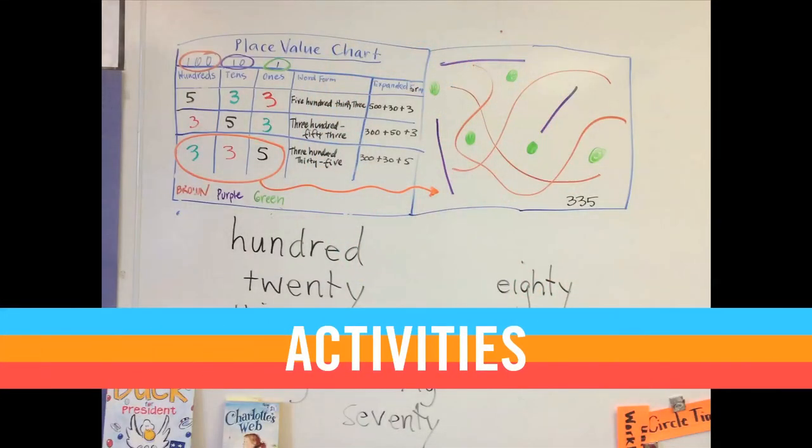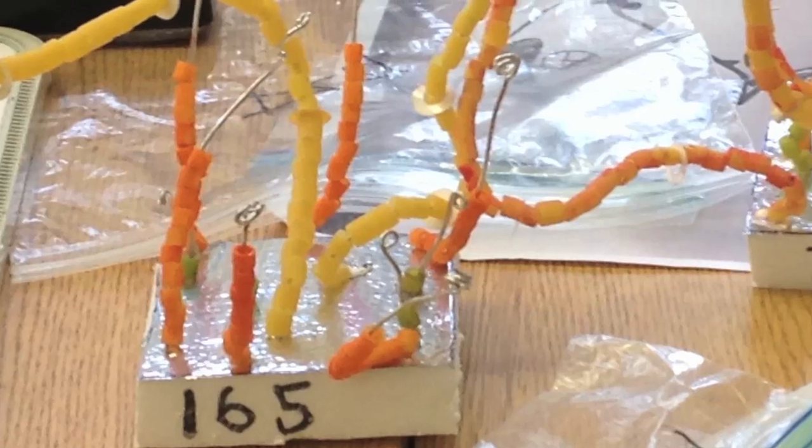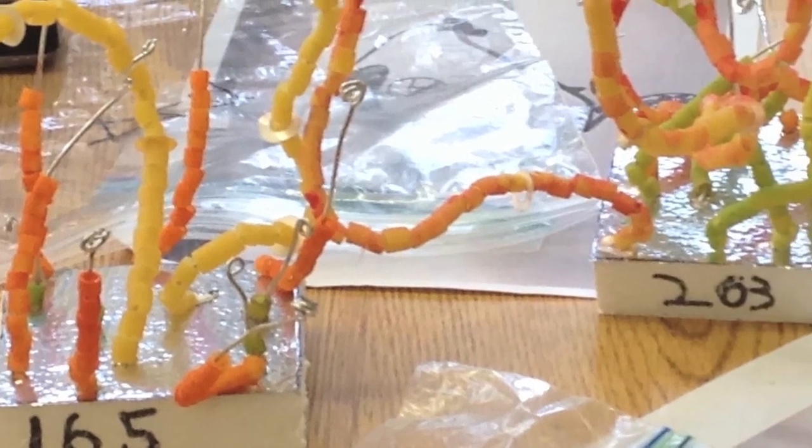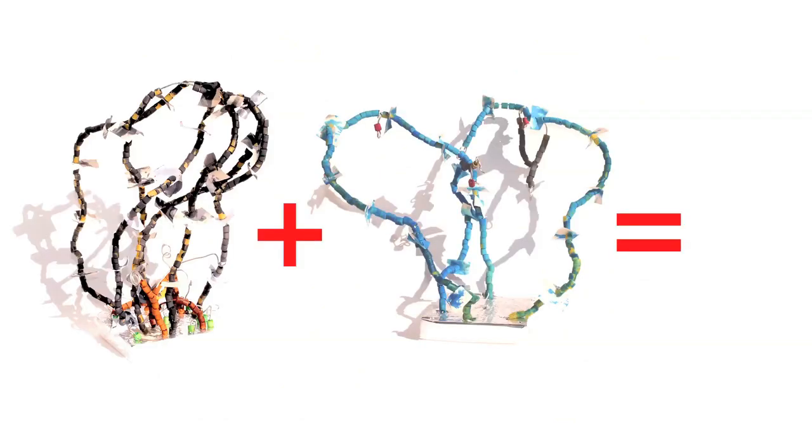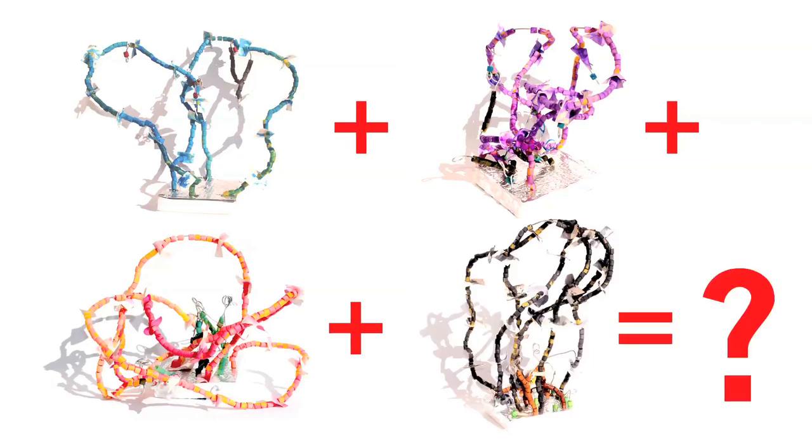You can use the finished place value sculptures to do interactive math activities using three-digit numbers. For example, ask students to find who has the lowest number at the table, who has the greatest number at the table. Arrange all sculptures from least to greatest. Find out which sculpture has the most hundreds, the most tens, the most ones. Try addition and subtraction activities too. What's the sum of your sculpture and your neighbor's sculpture? What's the difference? What's the sum of all the sculptures at your table? What's the sum of all the sculptures in the whole class?